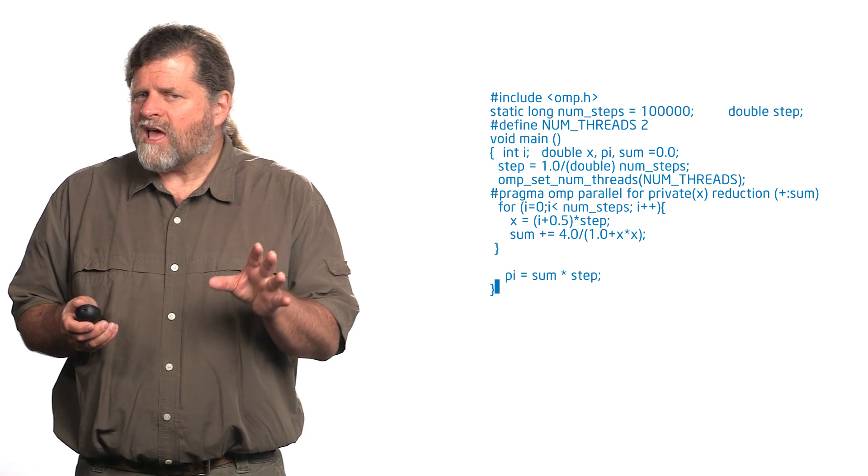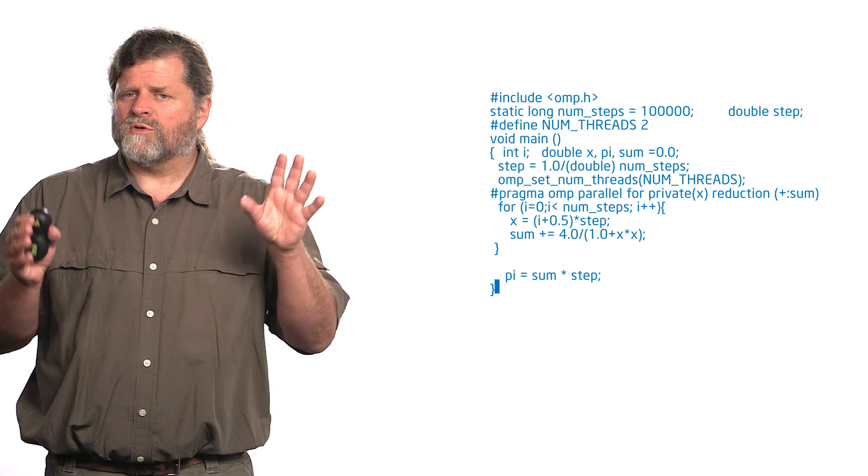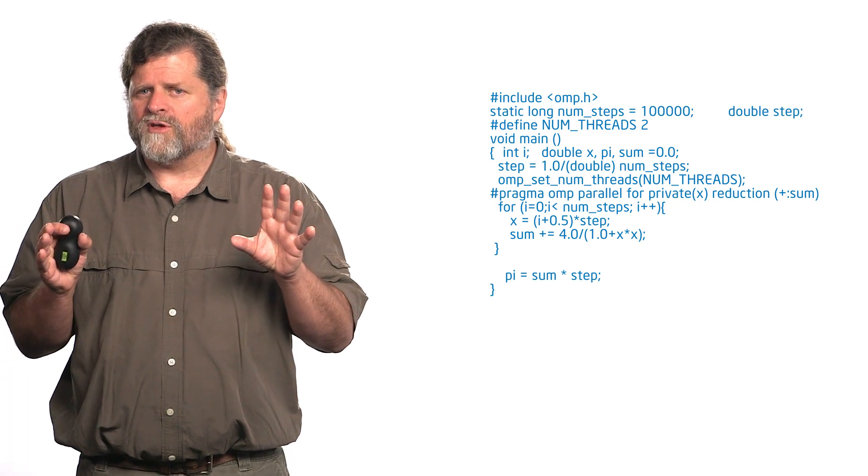You can see how this would project onto a larger program where you might have several blocks of loops — you go through and just apply this pattern again and again. Where's the compute intensive loop? Find it, parallelize it, find the next loop. That's the loop parallelism pattern.